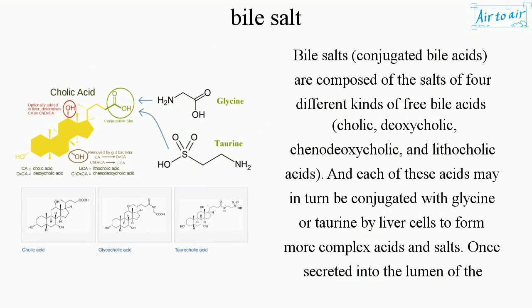Bile salts, or conjugated bile acids, are composed of the salts of four different kinds of free bile acids: cholic, deoxycholic, chenodeoxycholic, and lithocholic acids. Each of these acids may in turn be conjugated with glycine or taurine by liver cells to form more complex acids and salts.